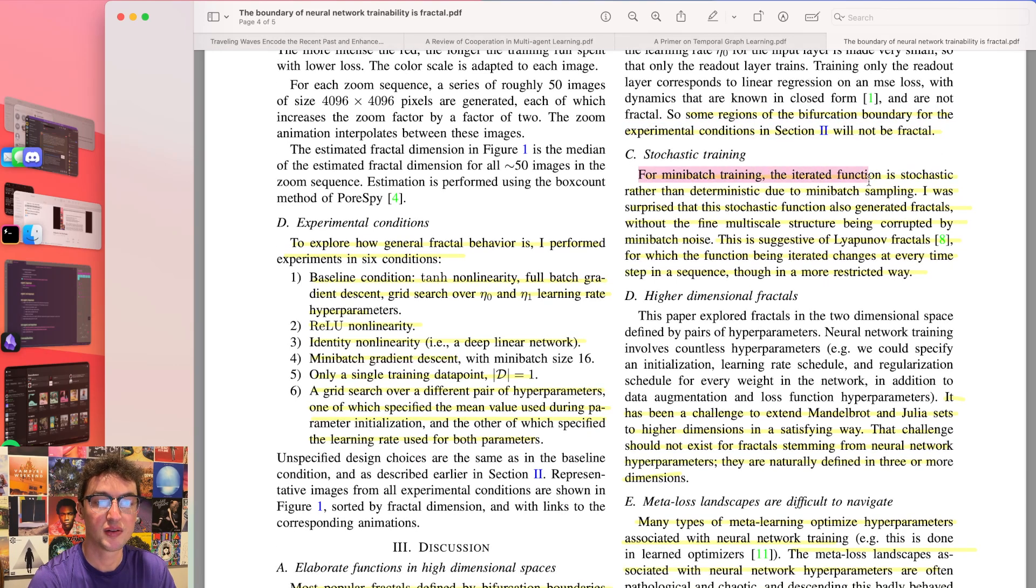Some regions of the bifurcation boundary for the experimental conditions in section two will not be fractal. For mini-batch training, the iterated function is stochastic rather than deterministic due to mini-batch sampling. He was surprised that the stochastic function also generated fractals. So the fact that there's randomness involved and it still had fractals is very interesting. Without the fine multi-scale structure being corrupted by mini-batch noise, you'd think that there wouldn't be clear boundaries because the randomness would just melt everything together and make kind of a soup of divergence versus convergence. But in reality, it still was fractal, which is pretty interesting. This is suggestive of Lyapunov fractals, which I'm not very familiar with, for which the function being iterated changes at every time step in a sequence, though in a more restricted way.